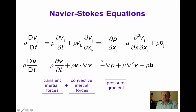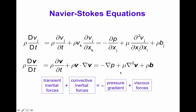Together these give the net inertial force with transient and convective components. Then we have a pressure gradient term, a viscous force term, and the body forces. These are the five terms constituting the Navier-Stokes equation — conservation of linear momentum for a linear isotropic incompressible Newtonian fluid.